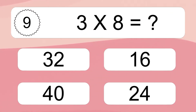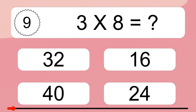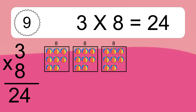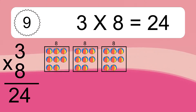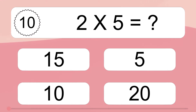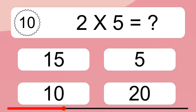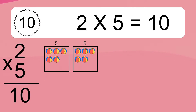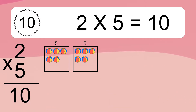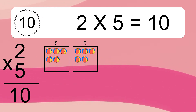Three times eight equals what? Three times eight equals 24. We have three boxes, and each box has eight colorful balls inside. If you count all the balls in all the boxes together, you will have three times eight balls. This equals 24 balls. Two times five equals what? Two times five equals ten. We have two boxes, and each box has five colorful balls inside. If you count all the balls in all the boxes together, you will have two times five balls. This equals ten balls.